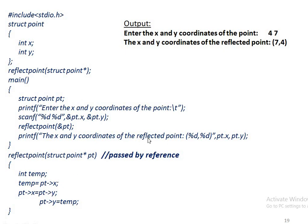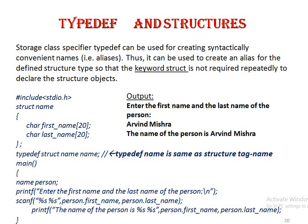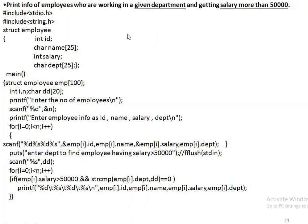typedef is a keyword that acts as a storage class. Whenever we want to avoid writing the 'struct' keyword every time we create an object, we use typedef. With typedef, the struct name is replaced by a new alias name, so every time you create an object you only need the alias name, not the 'struct' keyword.